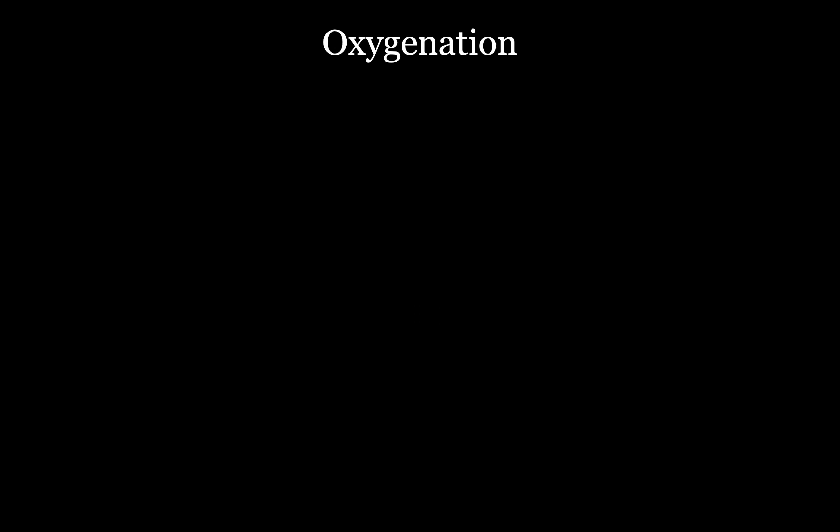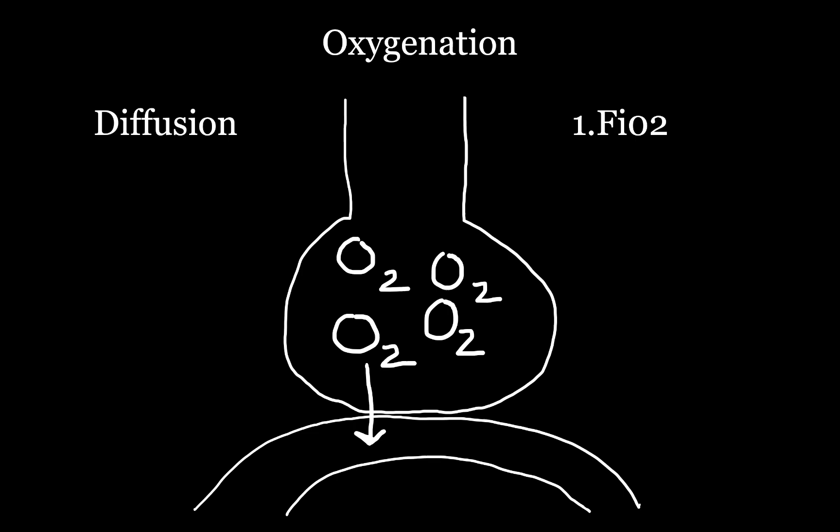Let's first talk about oxygenation. Oxygenation works by simple diffusion — O2 will move down its concentration gradient from the alveoli and into the capillaries. The simplest way to improve oxygenation is to add more oxygen and increase the FiO2. The next way to improve oxygenation is by increasing PEEP or setting optimal PEEP. It's not just high PEEP, but optimal PEEP.